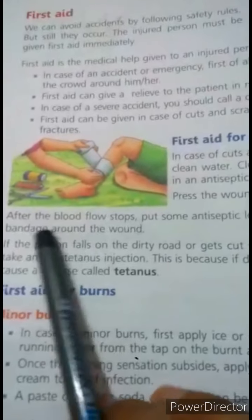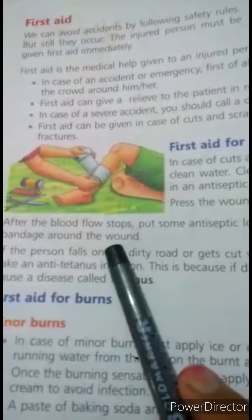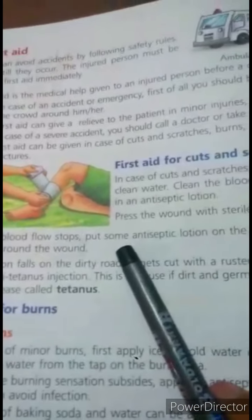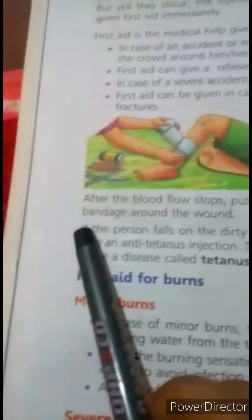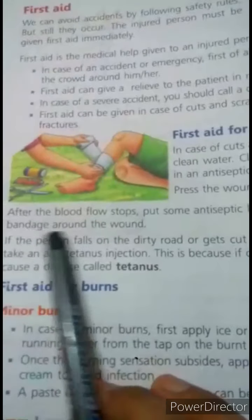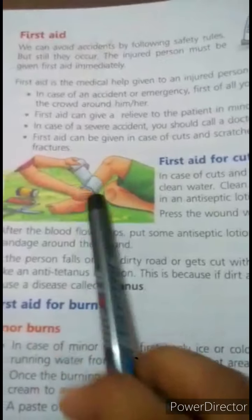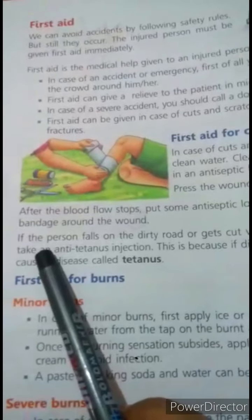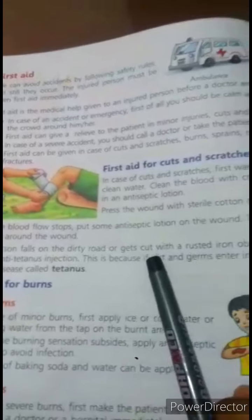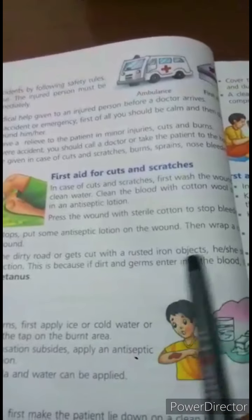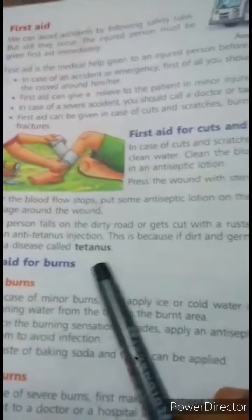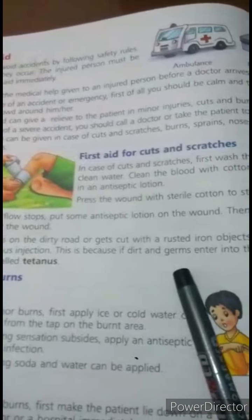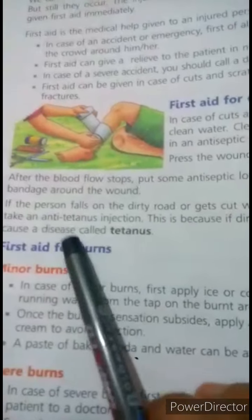After the blood flow stops, put antiseptic lotion on the wound, then wrap a cotton bandage around the wound. If the person falls on a dirty road or gets cut with a rusted iron object, he or she should take an anti-tetanus injection, because dirt and germs entering the blood may cause a disease called tetanus.